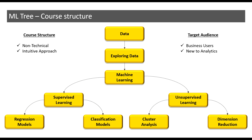After we receive data, what is the next step? The next step in the tree diagram is exploring data. This exploration is predominantly driven by the application of various statistical concepts. This step is important as it helps the analyst to take certain pre-emptive measures such as dealing with missing values, dealing with outliers, etc., before deploying any other advanced machine learning algorithm.